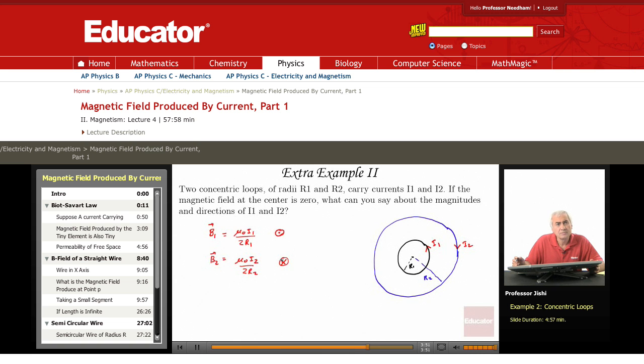Now, if the magnetic field is zero at the center, then those two magnitudes must be the same. So then, it means that mu0 I1 over 2R1 is mu0 I2 over 2R2.